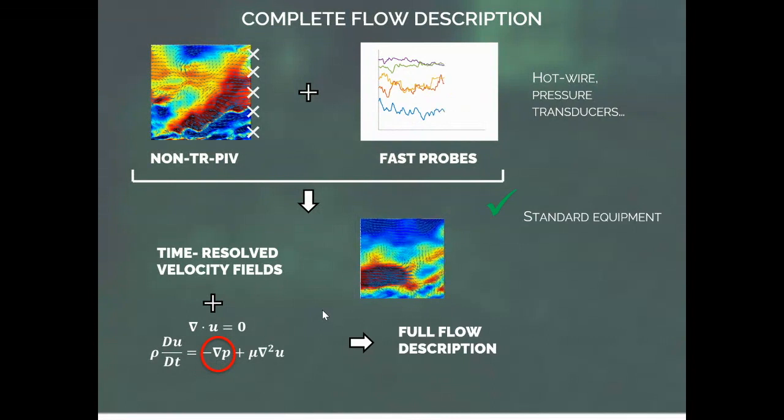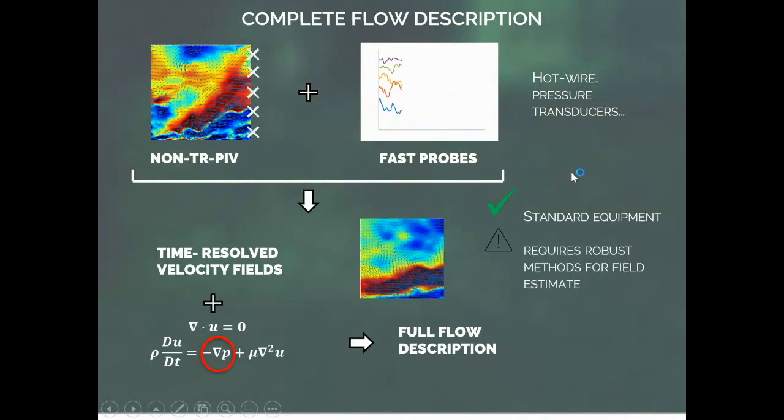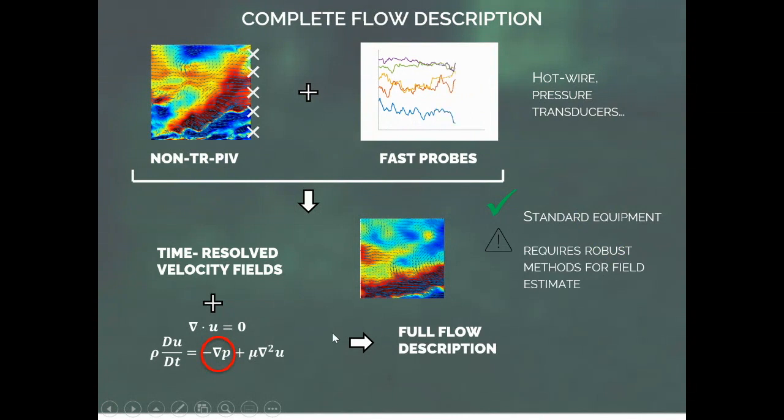Planar PIV and probes are available in many labs, and three-dimensional PIV is now starting to be more available in labs. The problem is that we require very robust methods for field estimation. And that is because later we want to integrate to get the pressure. So we need to have methods that are very robust, and we are going to exploit many of the methods based on neural networks to do that.